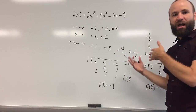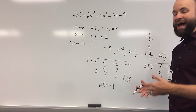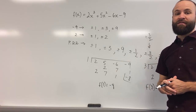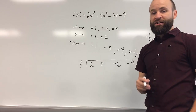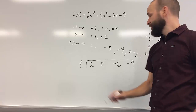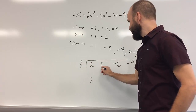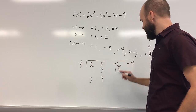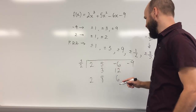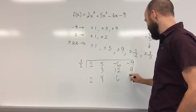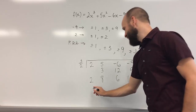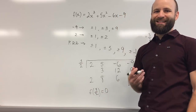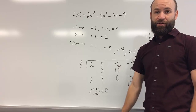Instead of going down the list and possibly trying 9 or some negative values, I'm going to try positive 3/2 next. Using synthetic division: 2; 2 times 3/2 is 3; 5 plus 3 is 8; 8 times 3/2 is 12; −6 plus 12 is 6; 6 times 3/2 is 9; and −9 plus 9 is 0. So f of 3/2 is 0, which means we found our first zero, thanks to the Intermediate Value Theorem.